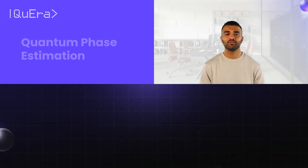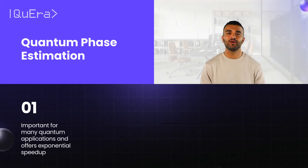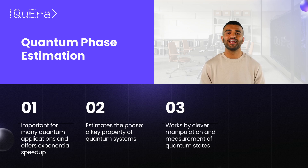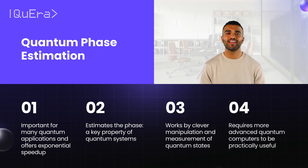In summary, QPE is important for many quantum applications and offers exponential speedup. It estimates the phase, a key property of quantum systems. The algorithm works by clever manipulation and measurement of quantum states, but QPE needs more advanced quantum computers to be practically useful.